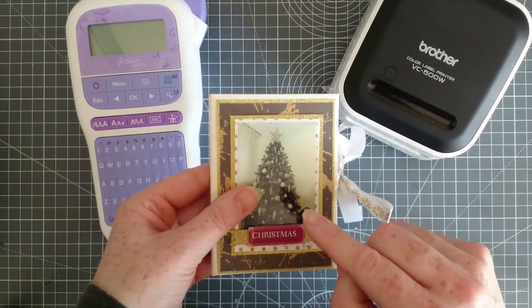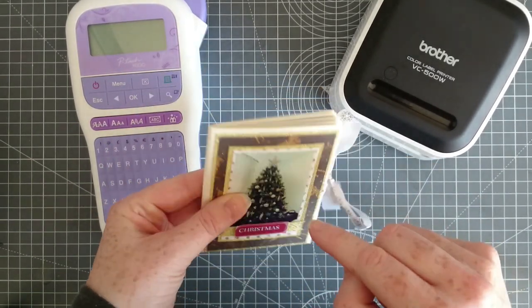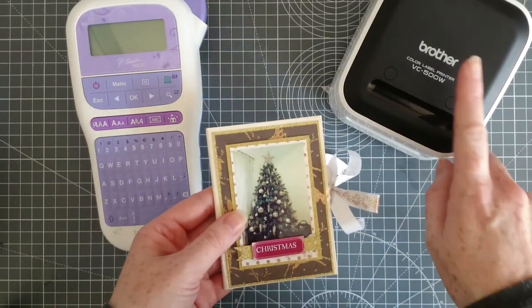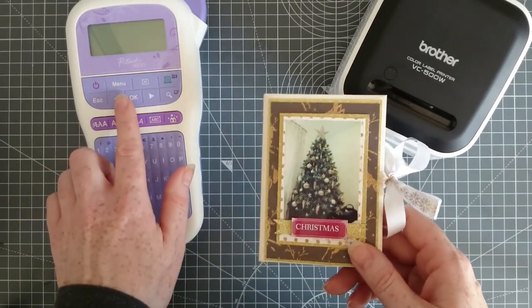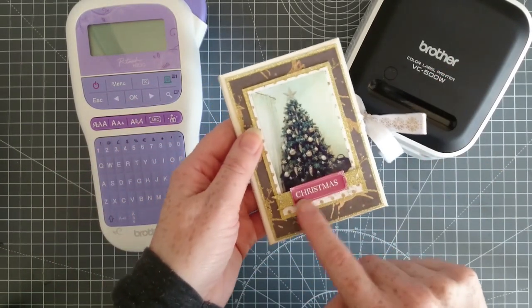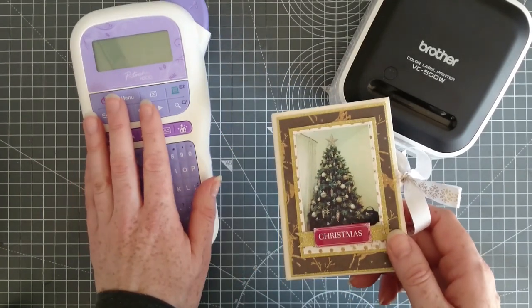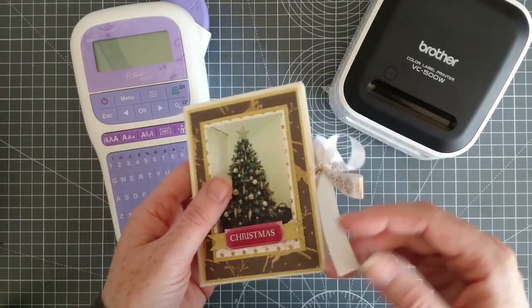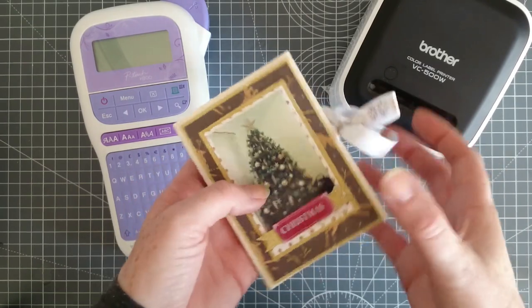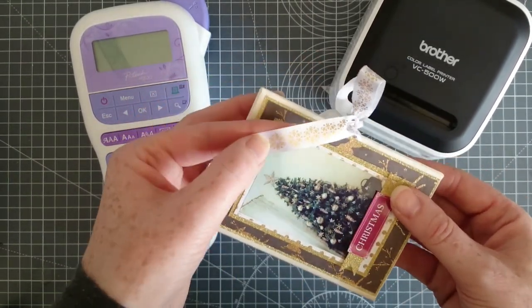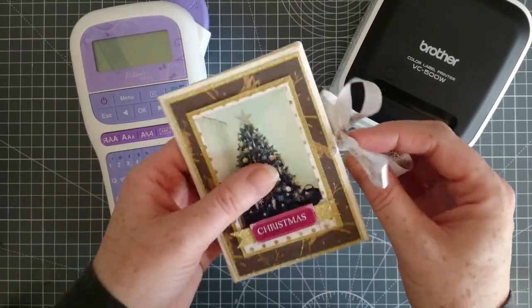The album is really easy and simple to put together, and I'll be showing you step by step how I did this throughout the video. I've used the color label printer to print off the photos and labels, and the ribbon enable printer to print off the ribbon in a snowflake pattern.